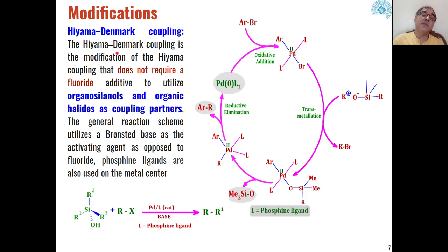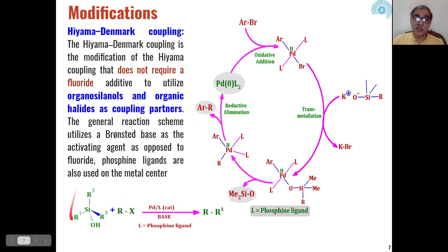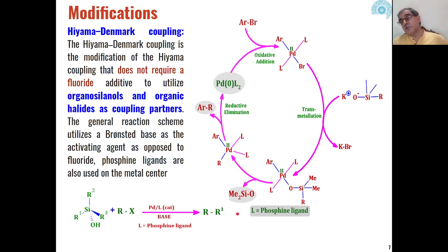Another important modification is Hiyama-Denmark coupling, where the use of fluoride is avoided. For these types of coupling reactions, we use organosilenol salts and organic halides as the coupling partners. When organosilenols react with organic halides in the presence of a palladium catalyst and a base — which is also silane-based — we get products with new carbon-carbon bond formation.